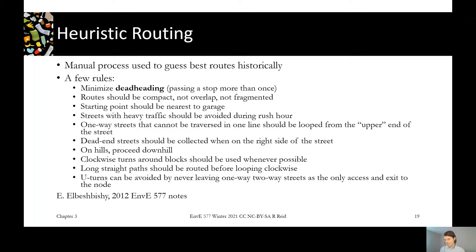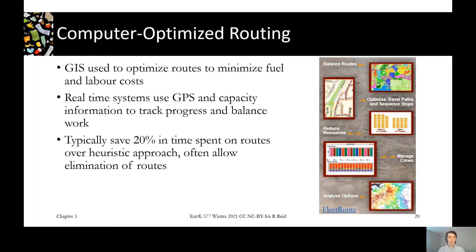These days, instead of doing things manually and guessing, there are all sorts of computer optimization programs that look at where waste generators are, how much they generate each week and how it varies throughout the year, and can generate optimized routes that lower how often trucks have to travel a route, reducing fuel consumption. Typically, these studies can lower operational expenses for routing by about 20%, which is substantial.